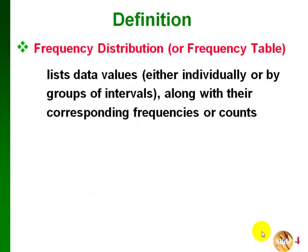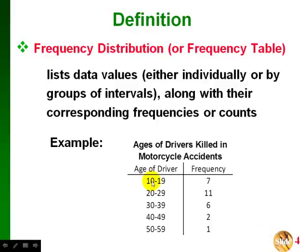A frequency distribution, also called a frequency table, lists data values either individually or by groups of intervals, along with their corresponding frequencies. A frequency is just the same as a count. Here's an example: we have different intervals for ages of drivers — 10 to 19, 20 to 29, and so on — with their frequencies on the side. The number of drivers between 10 and 19 killed in motorcycle accidents was 7; the number between 20 and 29 was 11.